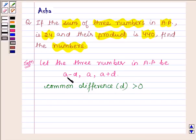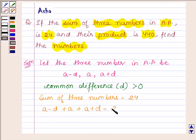Now, we are given that sum of these three numbers is equal to 24. So this implies A minus D plus A plus A plus D is equal to 24, or 3A is equal to 24, which further implies that A is equal to 8.